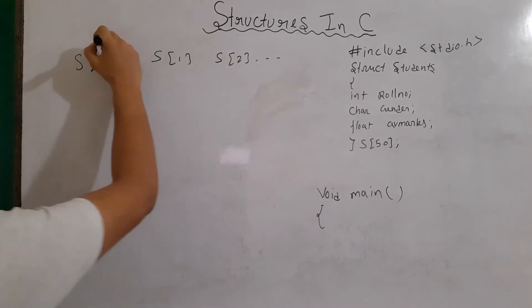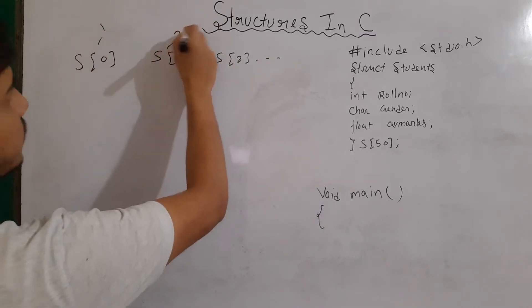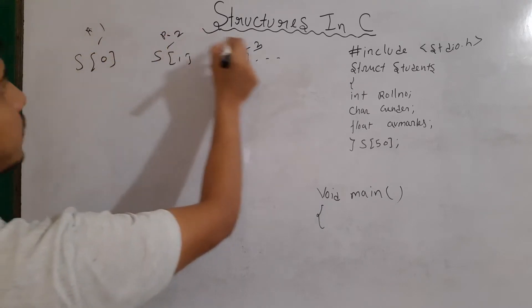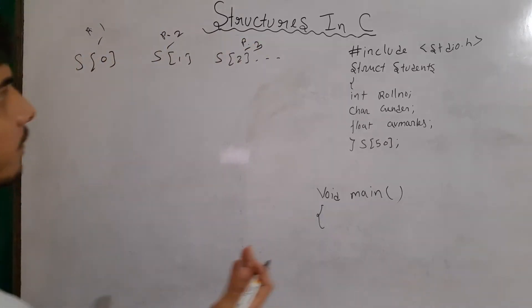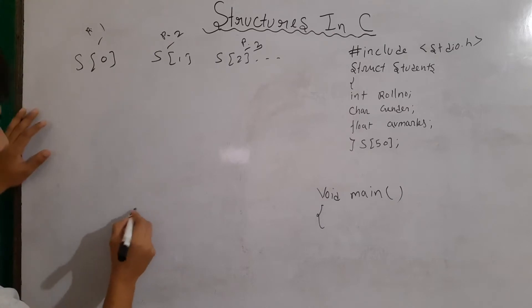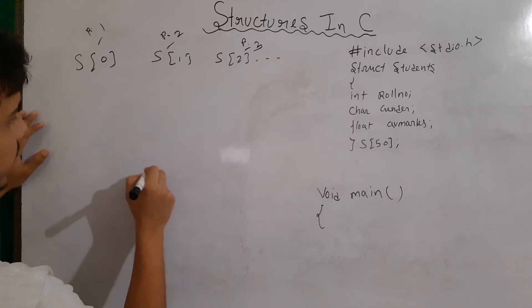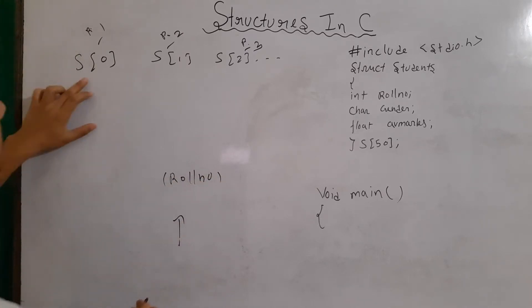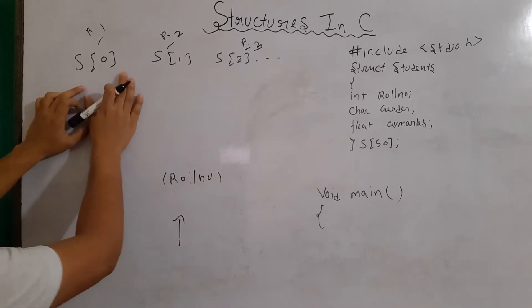Let's say the role number for S0 is 1 and for 1 it is 2 and then 3. This is role number. Now, we need to create a function such that if I send in the function the role number, then it should give me the information, all the information of that particular student.